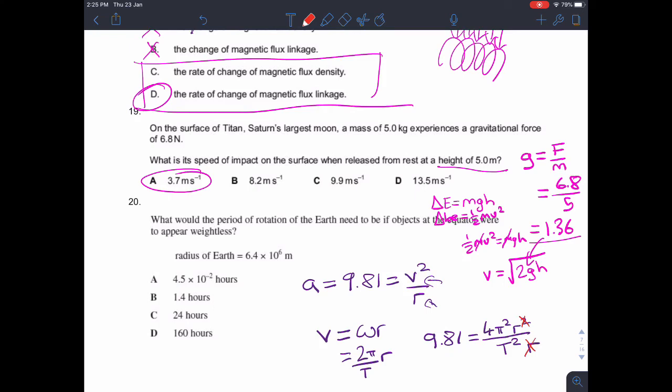Calculating that, putting that into your calculator to calculate T - remember, we want the period of rotation, which is T there - and that gives us a period of rotation of 1.4 hours. This will give you the period in seconds, and you'll need to convert it into hours for the answer.